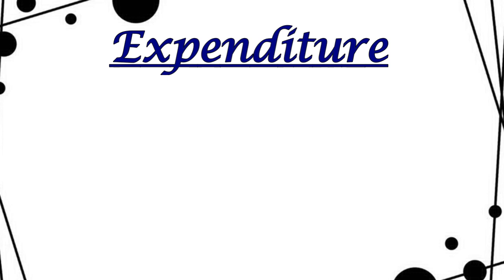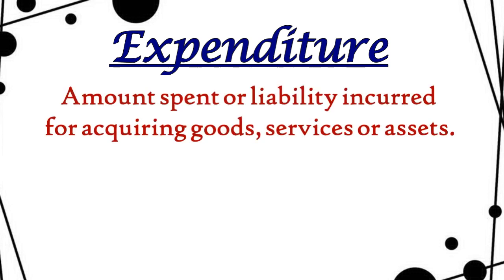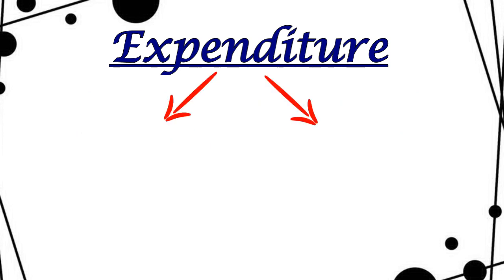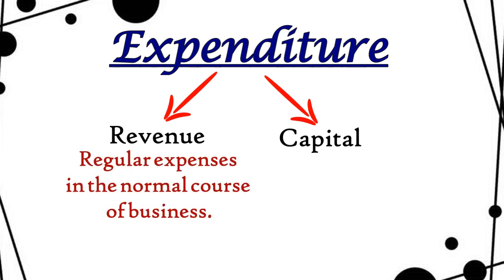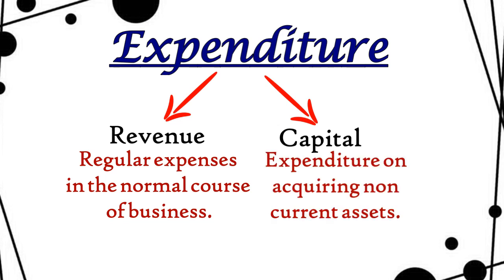The next term is expenditure — simply, kharcha. When a business spends money to purchase goods, services, or assets, that is called expenditure. Expenditure is divided into two categories: revenue expenditure and capital expenditure. Revenue expenditure is when you purchase goods and services for daily regular business expenses. Capital expenditure is when you purchase assets — to grow the business — like machinery, furniture, land and building.